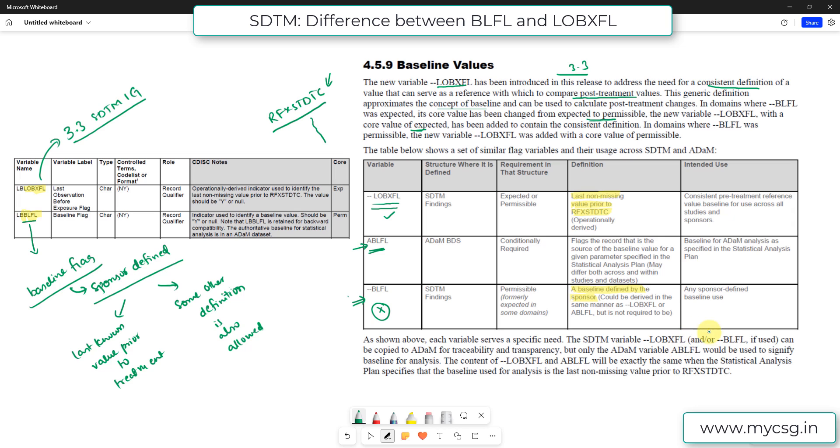The SDTM variable LOBXFL and/or BLFL if used can be copied to ADAM datasets for traceability and transparency. But only the ADAM variable ABLFL would be used to signify the baseline for analysis. Even if your definition is still the same in the study for baseline for analysis purposes, you can still carry forward your LOBXFL and BLFL if used into your ADAM datasets for traceability, and you can simply assign your ABLFL with the same value from LOBXFL. And in cases where it is differing, you can re-derive your ABLFL with a definition which is specified in the SAP for that dataset and study.